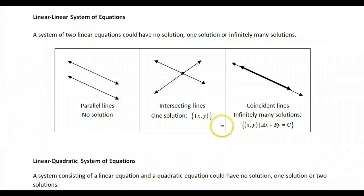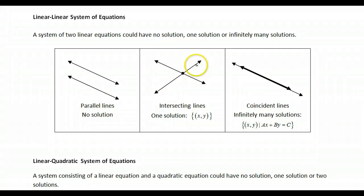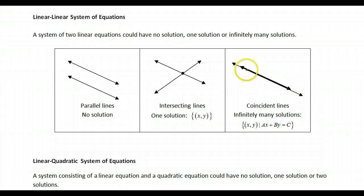They could have no solution — for example, parallel lines won't meet, there is no solution. They could have one solution, that would be intersecting lines, or they could have infinitely many solutions — that is, coincident lines, lines one on top of the other, which have infinitely many solutions: the set of all x, y that satisfy the equation of the line.